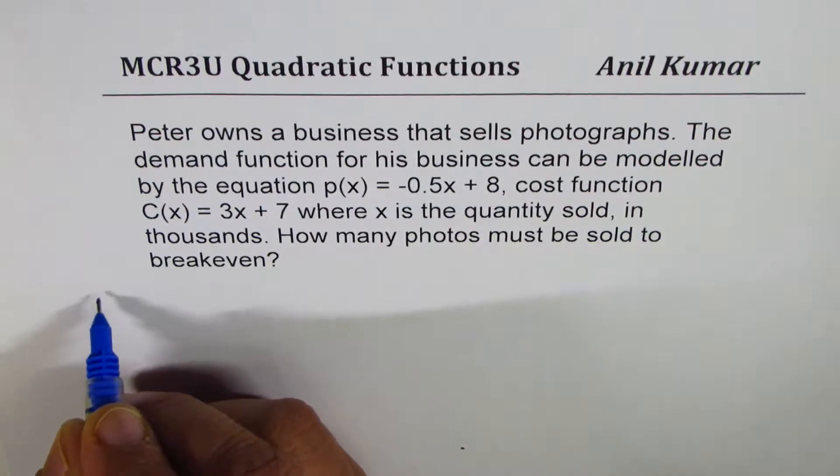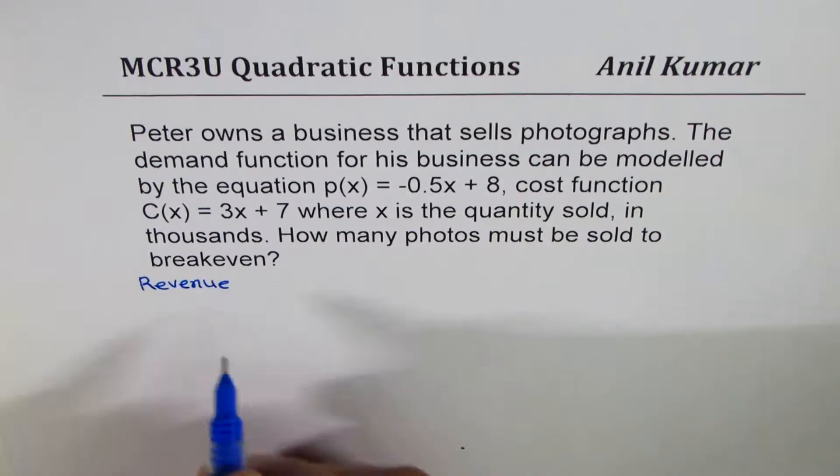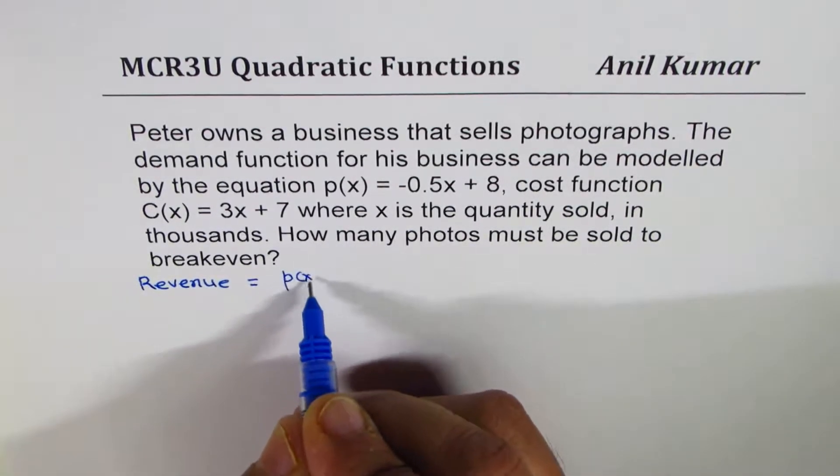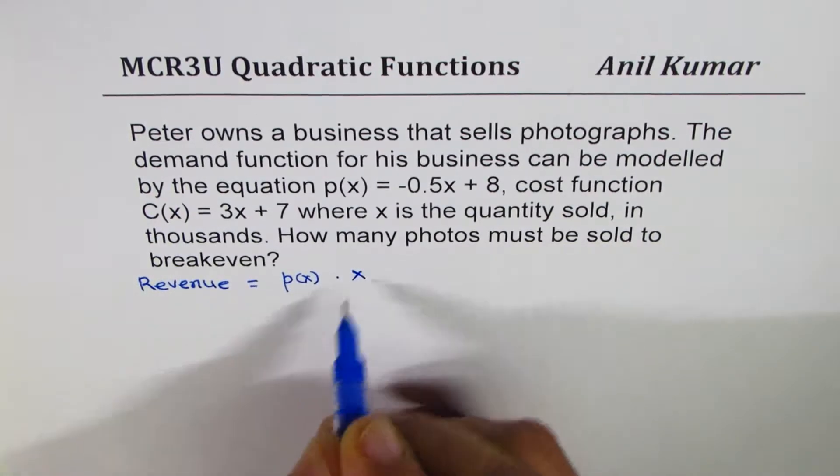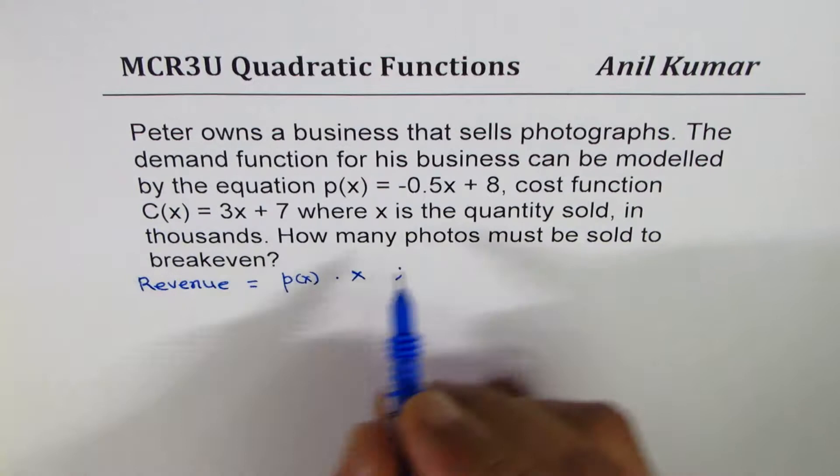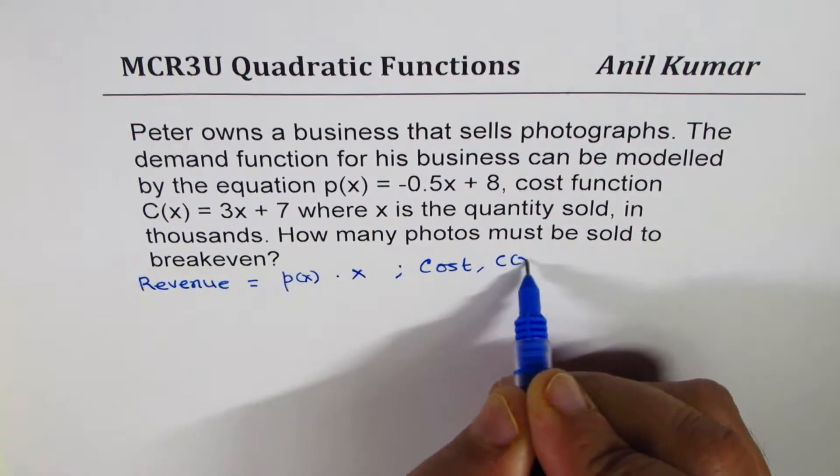So we have one function which is revenue. Revenue equals the demand function p(x) times number of items sold. That is important thing to understand. And then we already have cost function, which in our case is C(x).